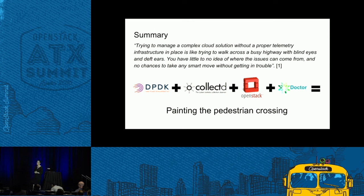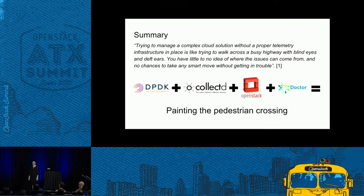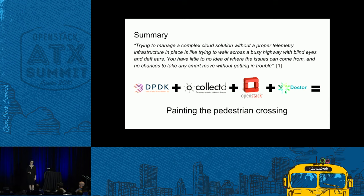To summarize with an analogy: trying to manage a complex cloud solution without proper telemetry infrastructure is like trying to walk across a busy highway with blind eyes and deaf ears — you have little idea where issues can come from and no chance to take any smart move. What we're trying to do by combining DPDK, CollectD, OpenStack, and Doctor is essentially painting the pedestrian crossing — putting the building blocks in place to allow us to not cross the highway blind and deaf. We really encourage you to come join us in OPNFV, the Doctor project, and SFQM.